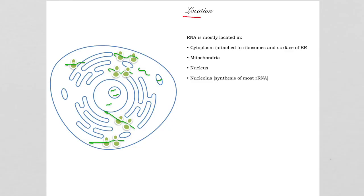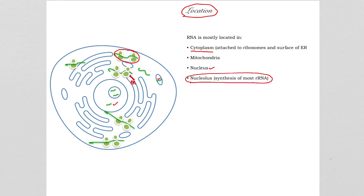So where is RNA located in a cell? Most of the RNA is in the cytoplasm attached to ribosomes, as well as attached to the surface of the endoplasmic reticulum. And then there is some RNA in your mitochondria. The rest is in the nucleus as well as that region of the nucleus that we call the nucleolus, where a lot of ribosomal RNA is being synthesized.